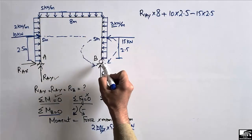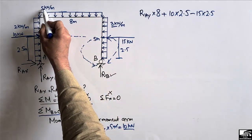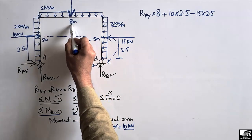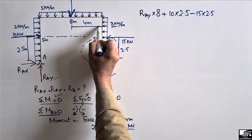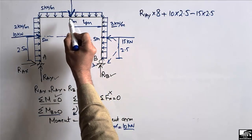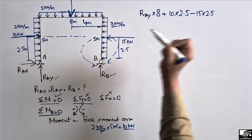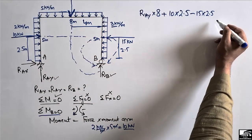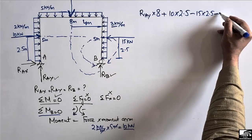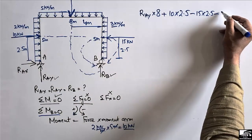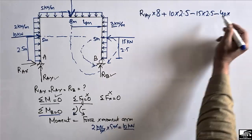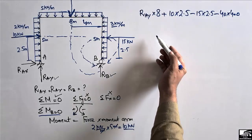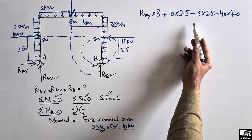The 5 kN/m load on the beam acts over 8 meters, giving a resultant of 5 × 8 = 40 kN acting at the center of the beam, 4 meters from each end. This creates an anti-clockwise moment about point B, so it is negative: −40 kN multiplied by a moment arm of 4 meters.